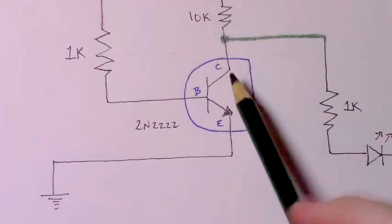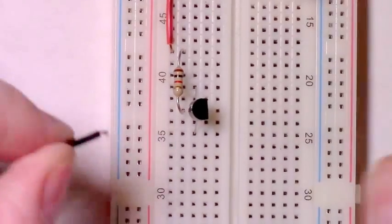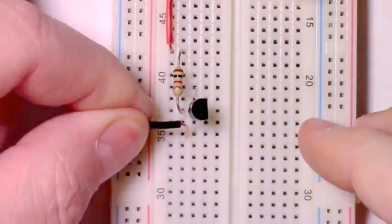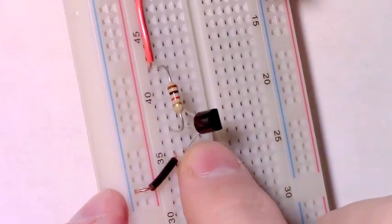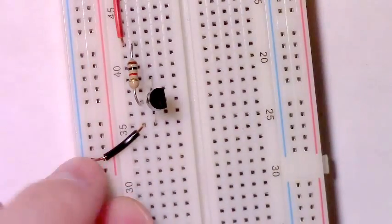The next thing we can do is connect our emitter directly to ground. Just a piece of wire. Here's the emitter of our NPN transistor through a piece of wire to the ground rail.